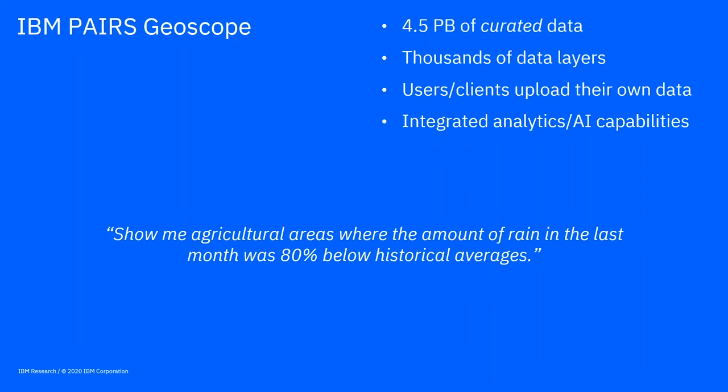So PAIRS Geoscope contains nearly five petabytes of data, and the key point is that it's curated — put in a standard format. It's received and put in this format once, and then everyone can use it many times, all relying on that same format. It has thousands of data layers. A layer might be temperature, pressure, elevation, or wave height, all as a function of time. It has the option that users can upload their own data and curate it similarly. And it also contains analytic capabilities of various types.